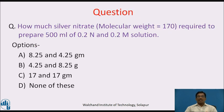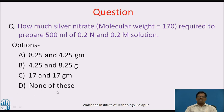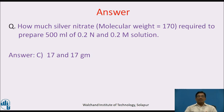Pause the video now and answer this question: How much silver nitrate (molecular weight 170) is required to prepare 500 ml of 0.2 normal and 0.2 molar solution? Options: a) 8.25 and 4.25 grams, b) 4.25 and 8.25 grams, c) 17 and 17 grams, d) none of these. Welcome back. The answer is c) 17 and 17 grams.